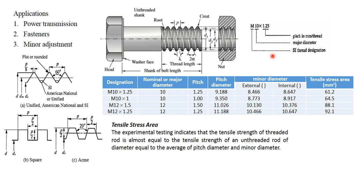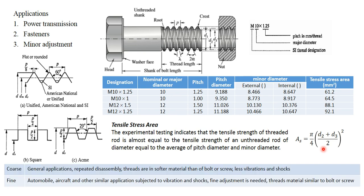Looking at the last column of the table, it shows the tensile stress area. This is the area corresponding to the assumed value of load, where we assume the load is supported. It is given by the average of the pitch diameter and minor diameter. The tensile stress area corresponds to the average of these two. We assume that failure is taking place along this area, and the load is also acting on it.